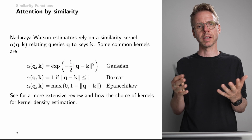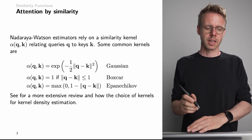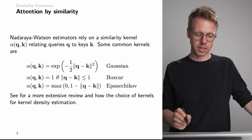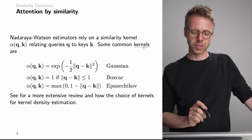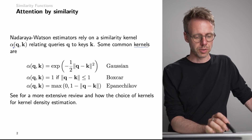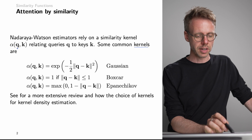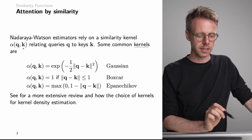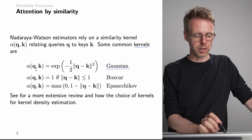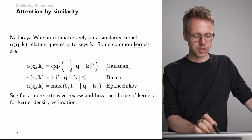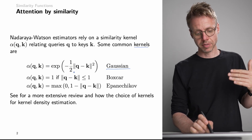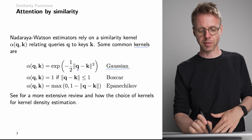How do we measure attention by similarity? These Nadaraya-Watson estimators use kernel functions to measure similarity. A kernel alpha that takes a query and a key might, for example, be the so-called Gaussian kernel.